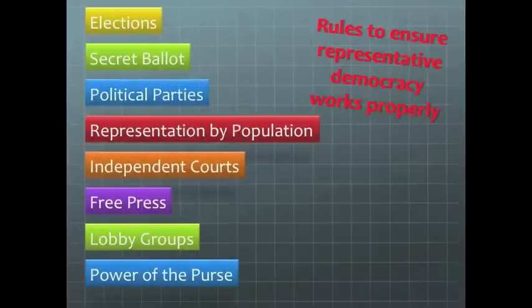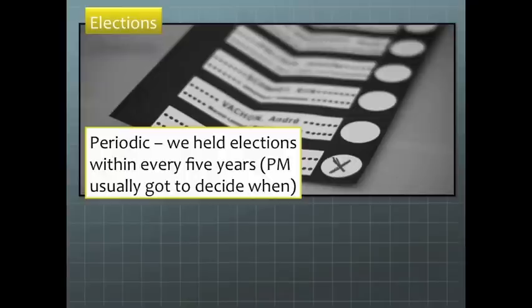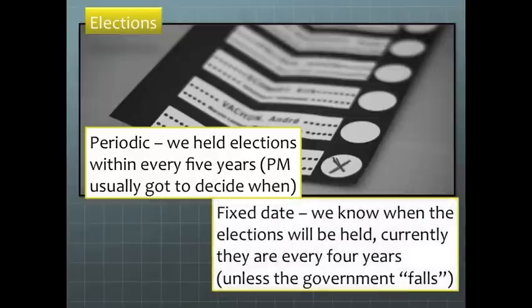Representative democracy has some rules to make sure that those values of democracy are protected. First is elections. We vote for our representatives in elections. Previously our elections were periodic, meaning they were held within five years. Now we have what's known as fixed date elections because they're held at the same time every four years, unless something comes up.